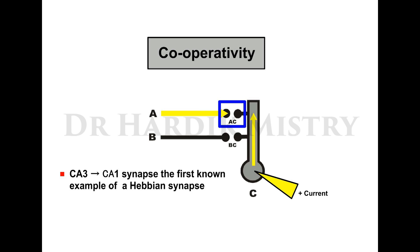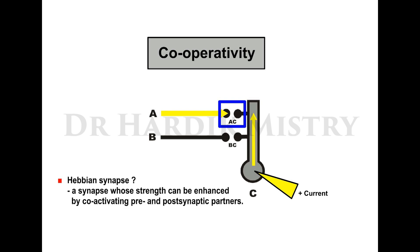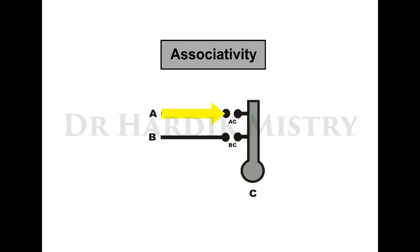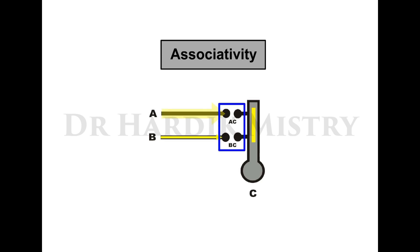The CA3-CA1 synapse is the first known example of a Hebbian synapse — a synapse whose strength can be enhanced by co-activating its pre- and post-synaptic partners. When AC synapse receives high-frequency stimuli and BC synapse receives low-frequency stimuli, and when AC and BC synapses are near each other, both synapses are potentiated and LTP develops. This property is known as associativity.